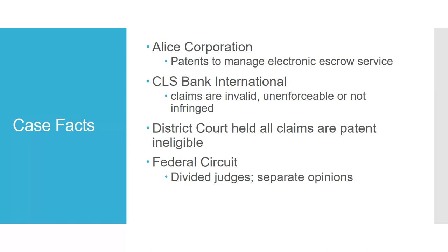Alice appealed this decision to the federal court. The judges were divided at first, but reversed the findings of the district court, then affirmed the lower court's ruling after rehearing en banc. A five-member plurality opinion ruled all claims patent ineligible, while other judges filed separate opinions — some dissenting, and some reaching the same conclusion but for different reasons.